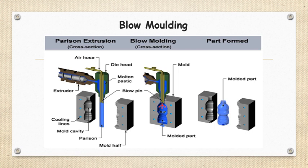A cross-section called a parison — a test tube-like cross-section — is prepared by the extrusion process. That is called a parison. Here it is shown: this blue-colored tube is the parison. This parison is kept in between the two mold cavities of which we are preparing the component.